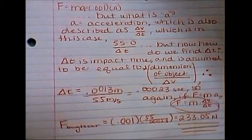Acceleration can also be described as the change of velocity over change of time expressed as delta v over delta t. In this case, we'll be 55 meters per second minus 0 meters per second over the change of time. But we still don't know the change of time.